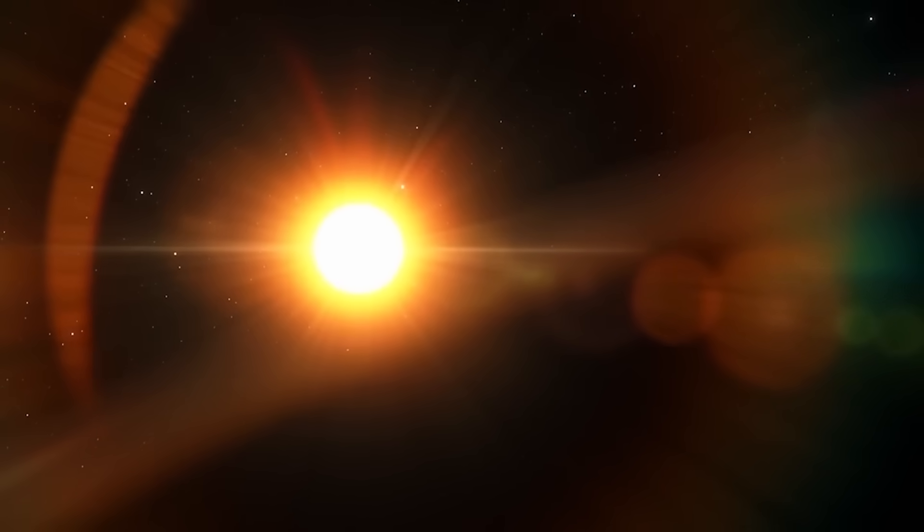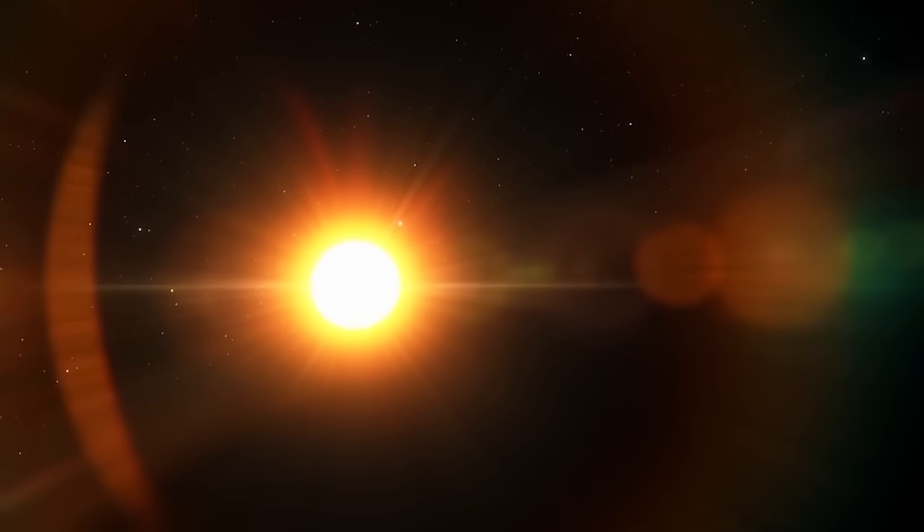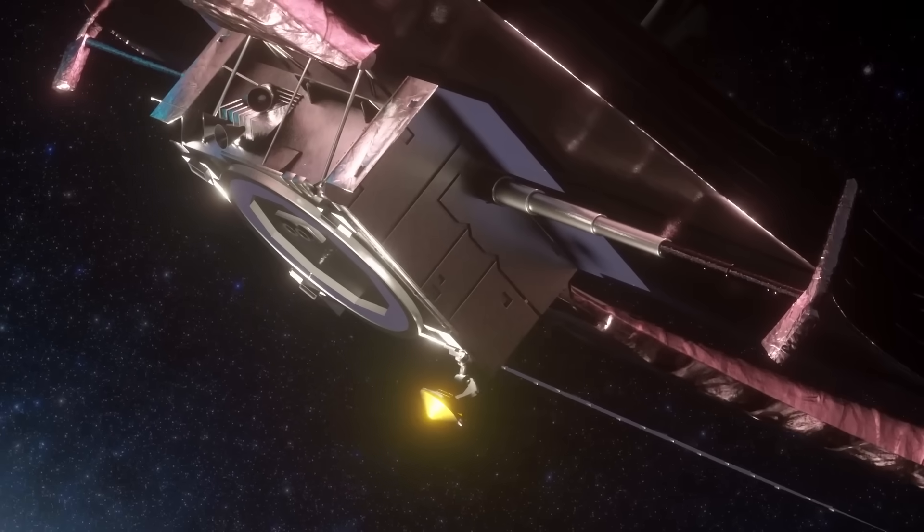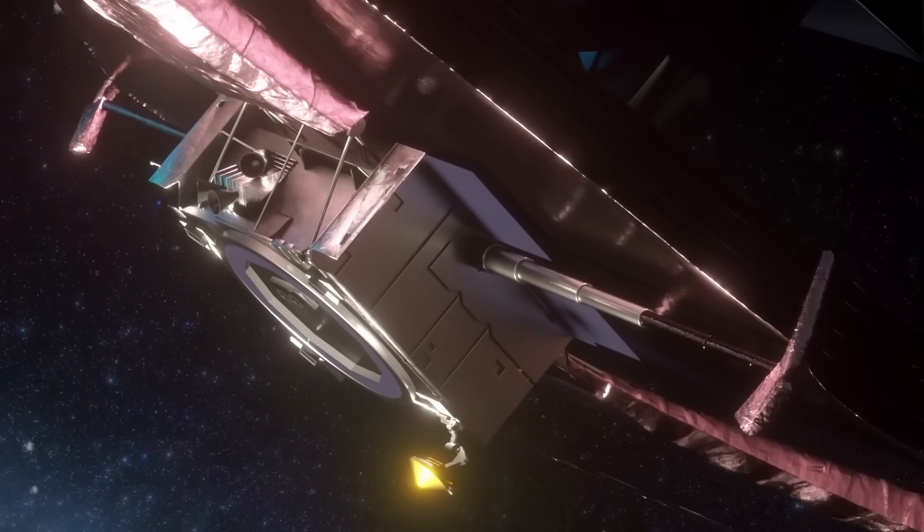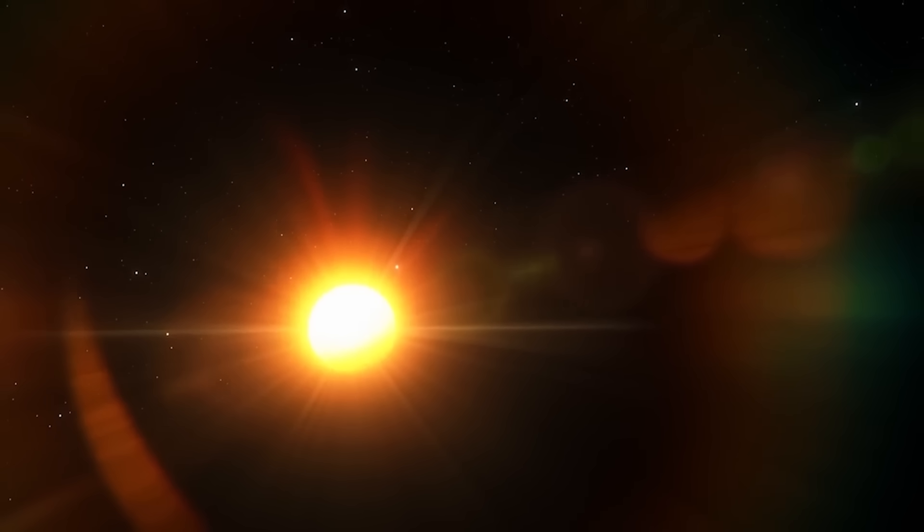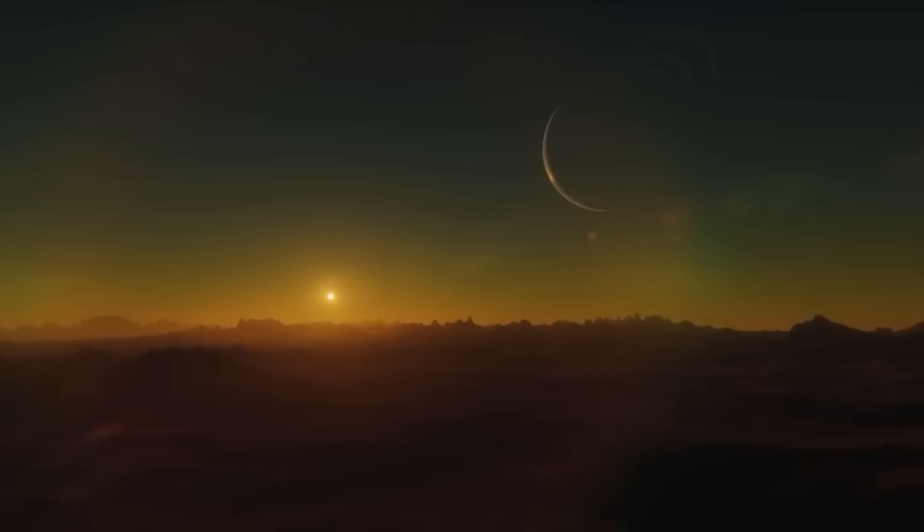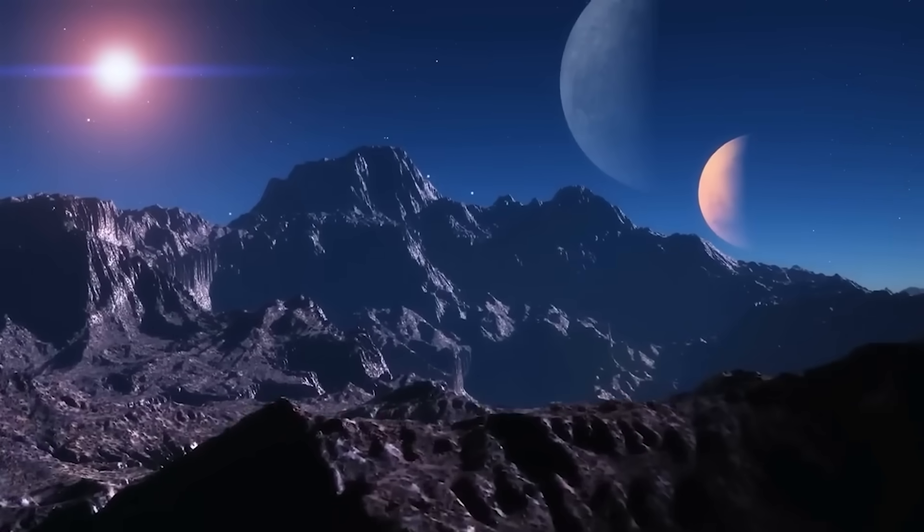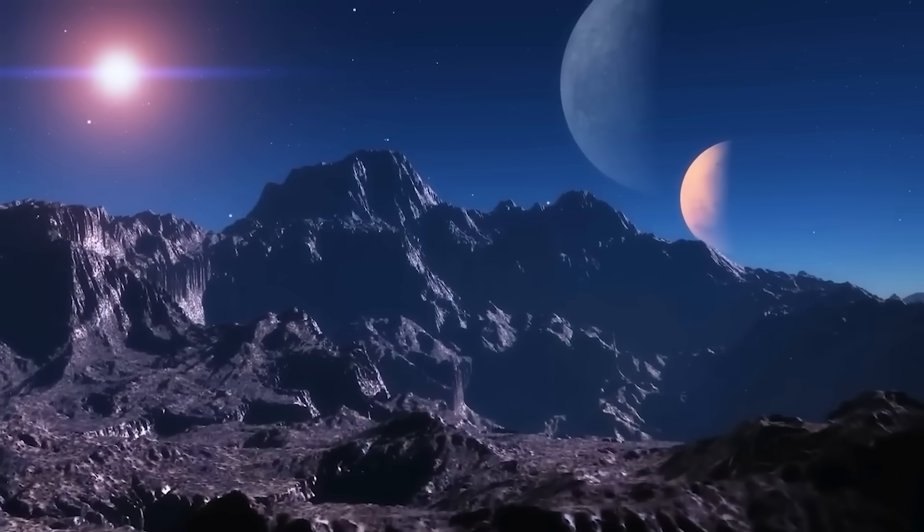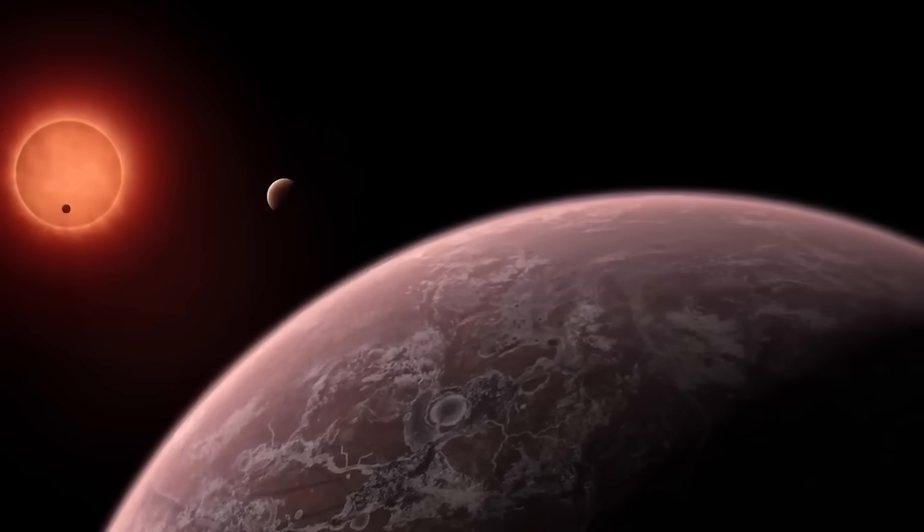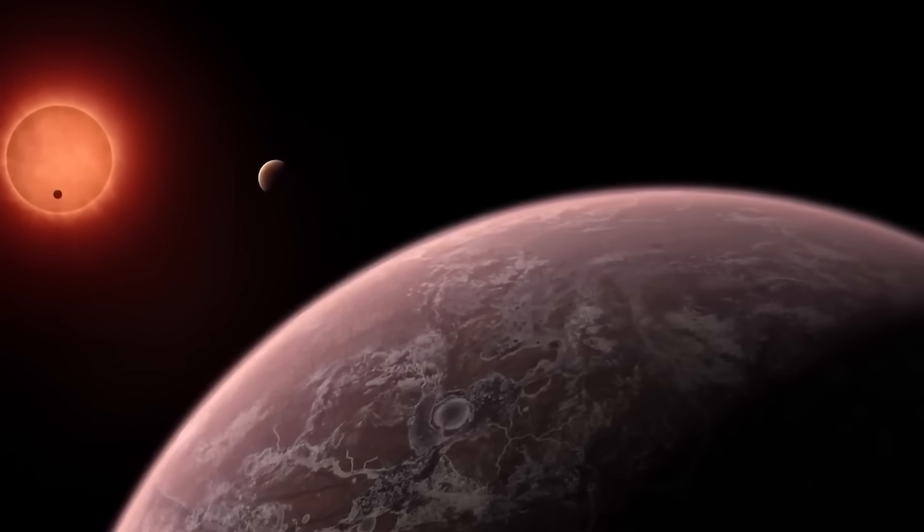The planet TRAPPIST-1c, once considered a prime candidate for habitability, has been just as disappointing. Webb found no sign of an atmosphere there either. The crushing disappointment isn't just about these specific planets, it's about what they represent. If even the most promising Earth-sized planets in a habitable zone can turn out to be lifeless, then perhaps truly Earth-like worlds are far rarer than we hoped. And if that's true, our place in the cosmos might be even more unique than we've ever dared to believe.